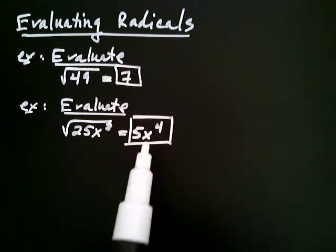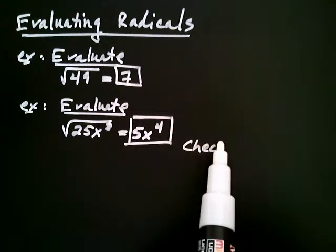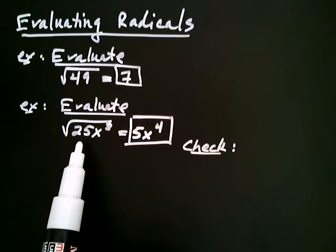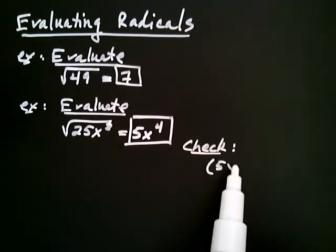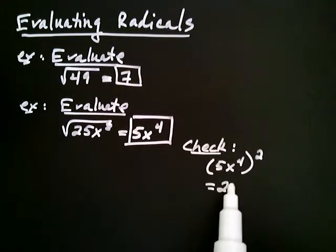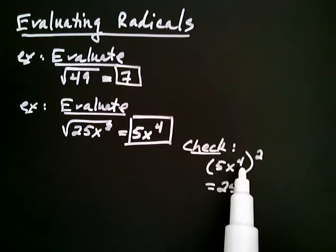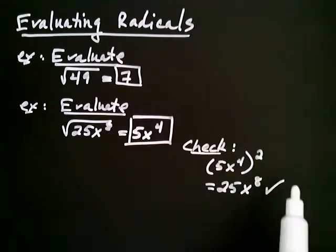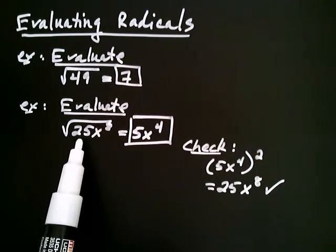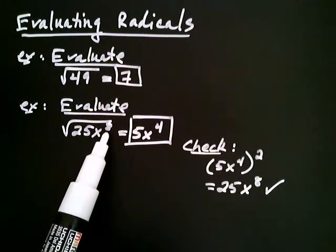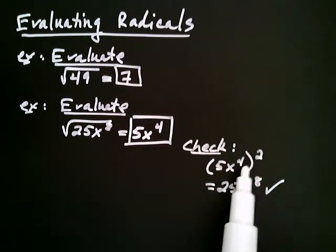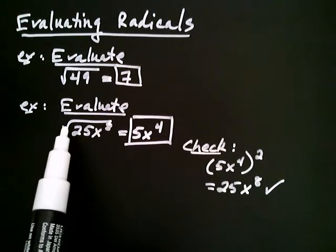How do I know that's true? I can check using properties of exponents: 5x to the fourth, squared, gives 25x to the eighth. I square the five and get 25, and when you square x to the fourth you multiply the exponents, giving x to the eighth. So it worked out. For the coefficient you truly take a square root, but for the exponents it's a matter of division — eight divided by two gave me four. You divide the exponent by the index to get the new exponent.